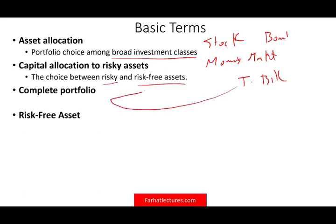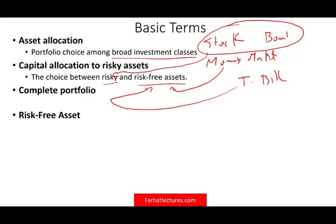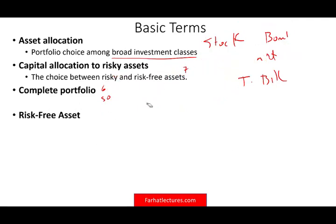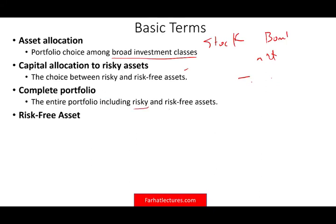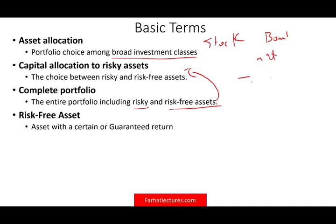The T-bill is risk-free. Money market is considered risk-free. Stocks and bonds are considered risky assets. So the question in the capital allocation stage becomes: how much do you invest — do you want to do 60/40, 50/50, 70/30? What percentage do you want to allocate to risky assets? The complete portfolio is the entire portfolio including both risky and risk-free assets. The risk-free asset has a certain or guaranteed return, and for the purpose of this course, we consider US government treasury bills as the risk-free asset benchmark.